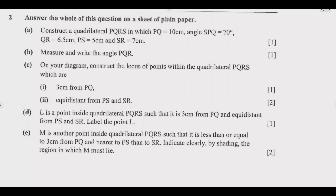Question A: Construct a quadrilateral PQRS in which PQ equals 10 centimeters, angle SPQ is equal to 70 degrees, QR equals 6.5 centimeters, PS equals 5 centimeters, and SR equals 7 centimeters. Question B: Measure and write the angle PQR. Question C: On your diagram, construct the locus of points within the quadrilateral PQRS which are 3 centimeters from PQ.